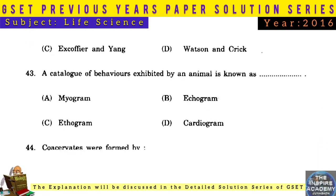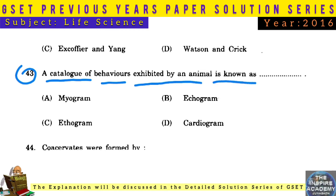Question No. 43: A catalogue of behaviours exhibited by an animal is known as an ethogram.